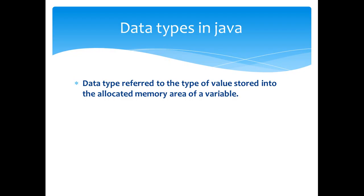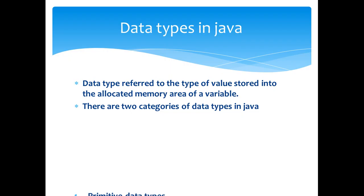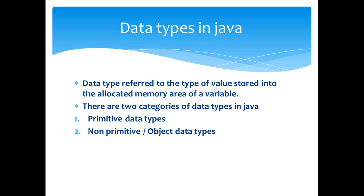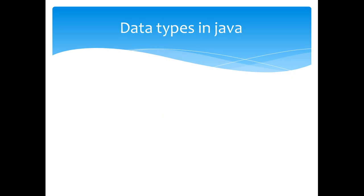A data type is referred to the type of data values stored in the allocated memory of a variable. There are two categories of data types available in Java. The first one is the primitive data types and the second one is non-primitive or object data types.